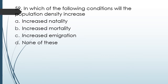Question No. 59: In which of the following conditions will the population density increase? Increased natality, Increased mortality, Increased emigration, or Option D, none of these? The correct answer is Option A, Increased natality. If natality increases, more number of children are born and the population density will increase. Increased mortality means more people are dying, so population density decreases. Increased emigration — 'E for exit, E for emigration' — means more people are moving out of that population, so population density decreases. Only Option A is correct: increased natality results in increased population density.